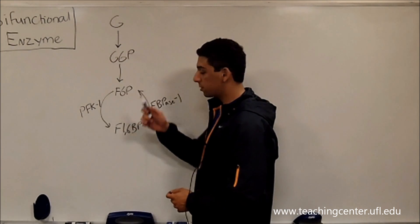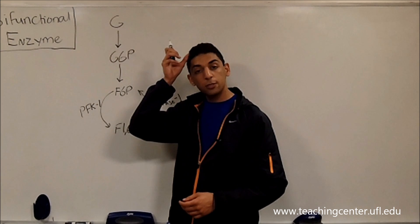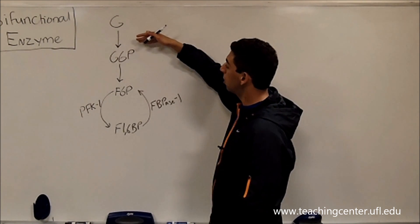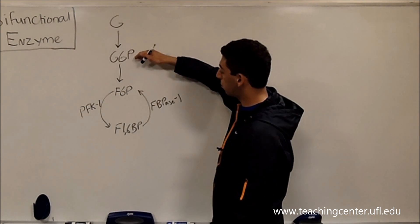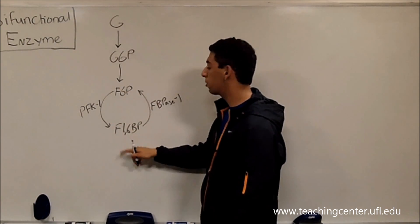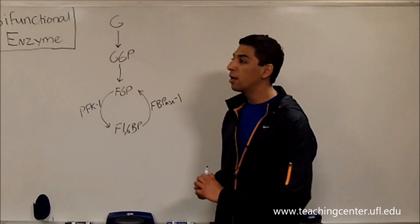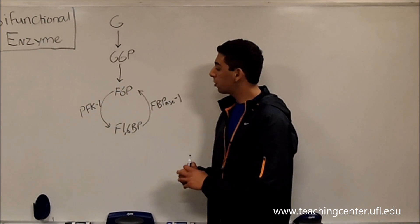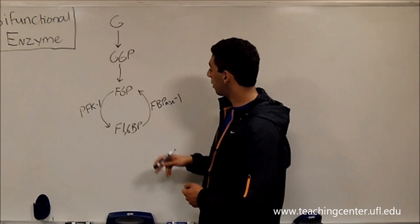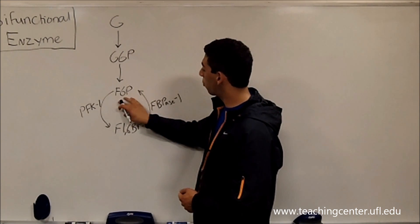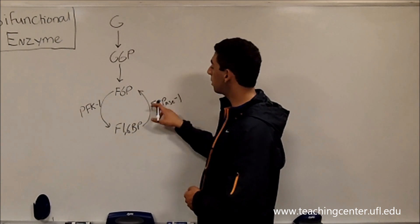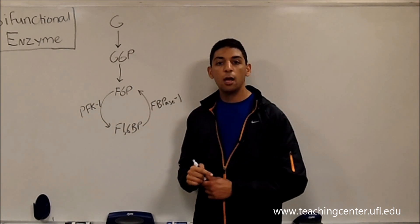So what I've got here next to me are the first couple steps of glycolysis. You've got glucose becomes glucose 6-phosphate to fructose 6-phosphate to fructose 1,6-bisphosphate. Now, if you guys have learned gluconeogenesis already, you know that this here is one of the steps that is bypassed in gluconeogenesis.